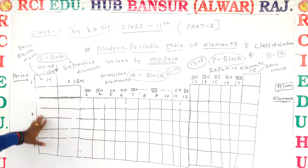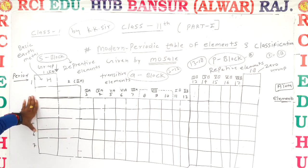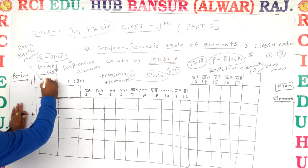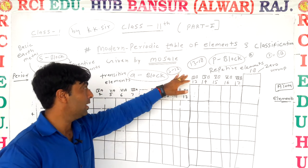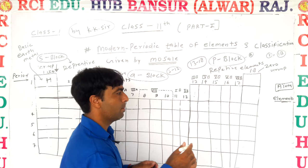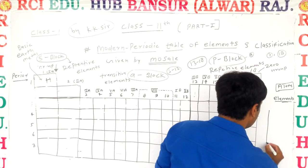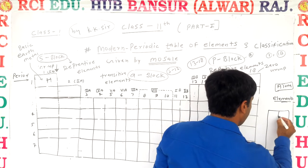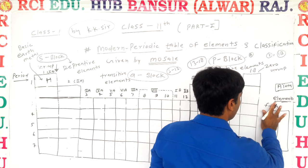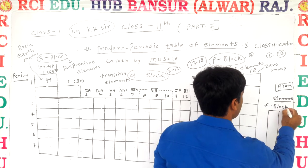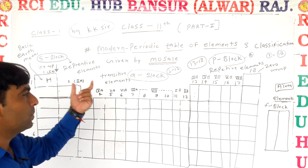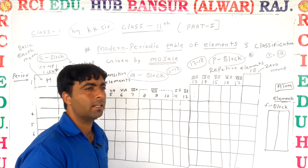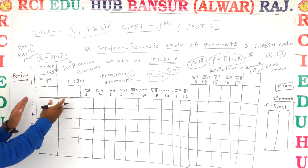According to the limitations of other periodic tables, it will be represented in a simple way. You can see there will be four parts: S, P, D, and F. The modern periodic table is represented in four parts — S, P, D, and F blocks.